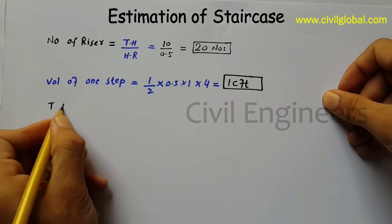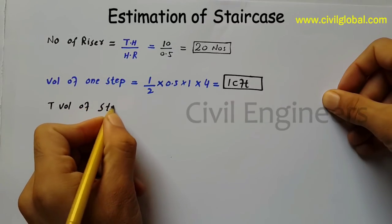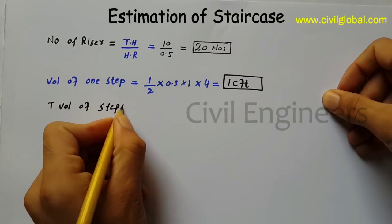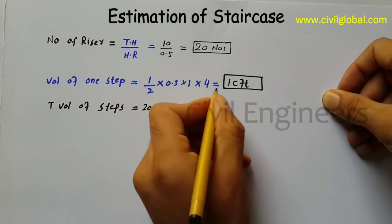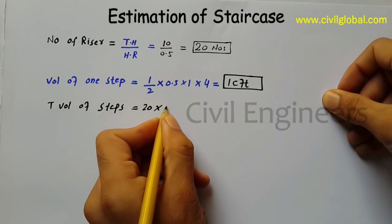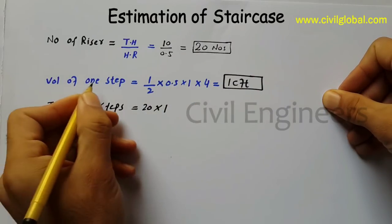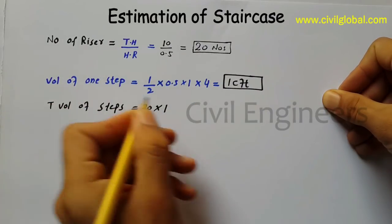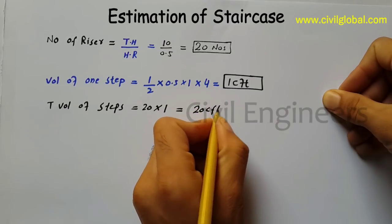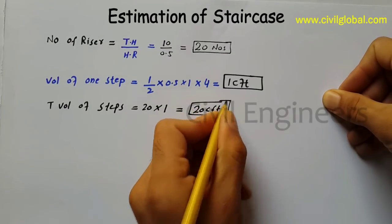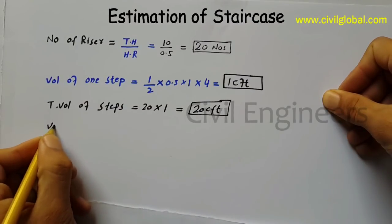Total volume of steps: we already have 20 numbers of risers and 1 cft is the volume of one step. So total volume of steps is 20 cft.